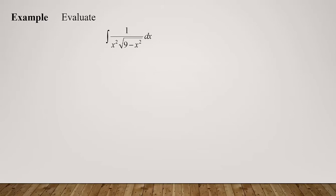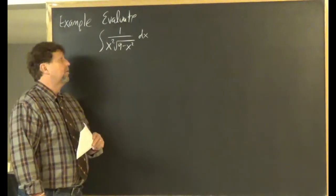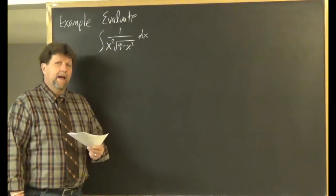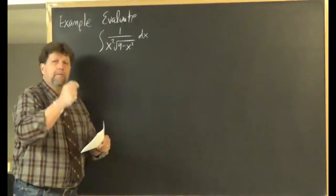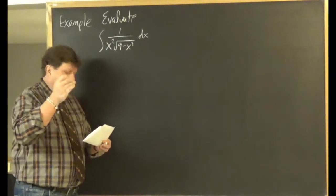Let's head back to the slides and do our first example. We're going to evaluate the integral of 1/(x²√(9 − x²)) dx. This looks like special radical number one, √(a² − u²), where a = 3.